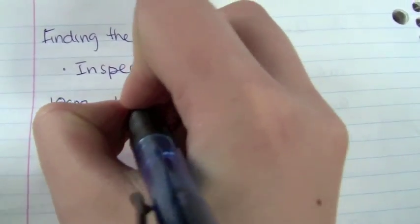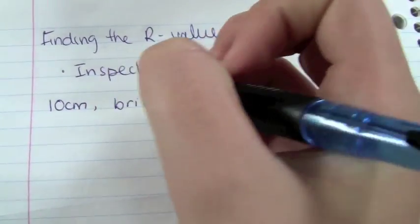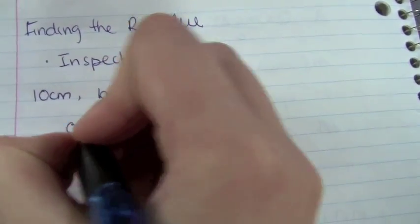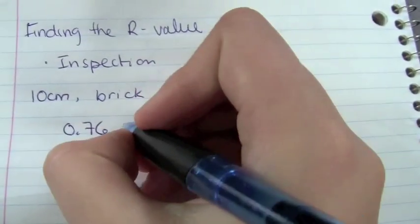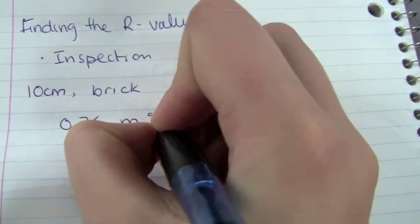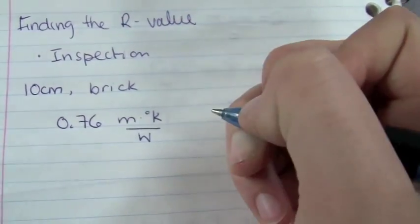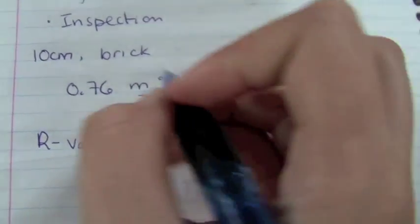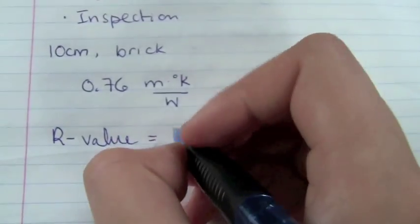Let's say in this case, I'm looking at a 10 cm thick wall that's made out of brick. The SI R value of brick is given as 0.76 meters times degrees Kelvin over watts. Now, in order to find the R value that I'm going to be using in future calculations, I simply need to multiply the thickness times this R value factor that I found.